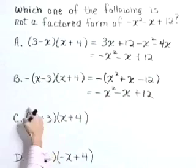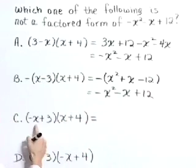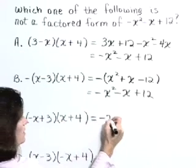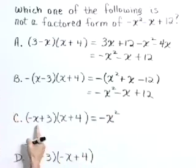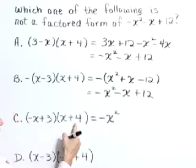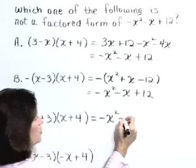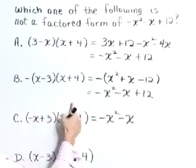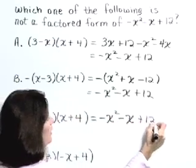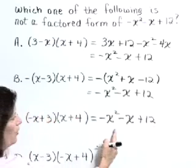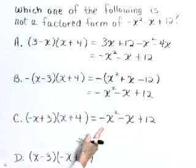Let's go to c. Foiling, negative x times x is negative x squared. Outer product is negative 4x. Inner product is positive 3x. They combine to negative x. Last product is plus 12. Yep, c is also a factored form then of our trinomial.